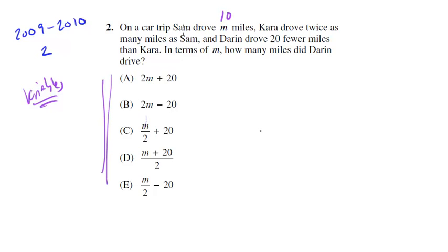So let's just try 10. So on a car trip, Sam drove 10 miles. Cara drove twice as many miles as Sam, so Cara then drove 20. And Darren drove 20 fewer miles than Cara. So Darren then drove 0. I mean, it's good enough. It works. In terms of M, how many miles did Darren drive? So what do we do now? We want to find out how many miles did Darren drive. Well, we know he drove 0. So we want to find which of the answers here equals 0. So how do we do that? Well, we look at the answers. We plug in our variable in for theirs. So 2M plus 20, that's 2 times 10 plus 20. That's equal to 40. No good. How about this one? 2 times 10 minus 20. That's equal to 0. Yep, that looks good.